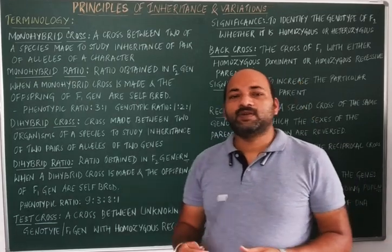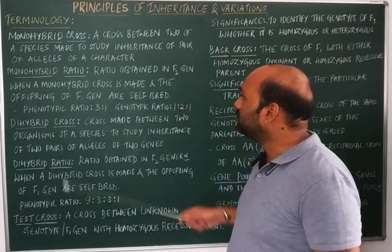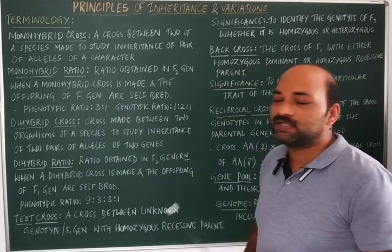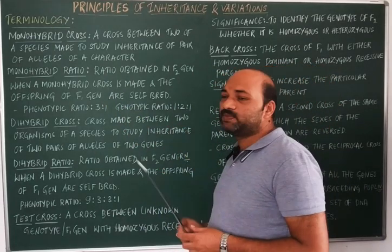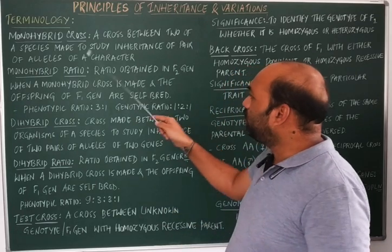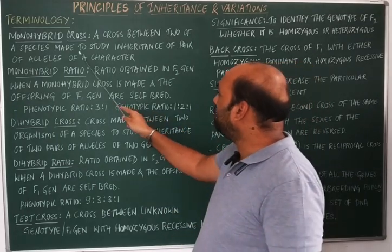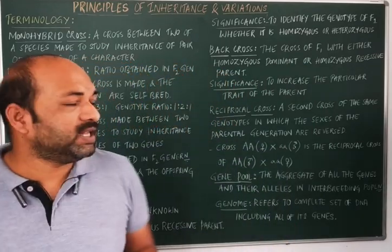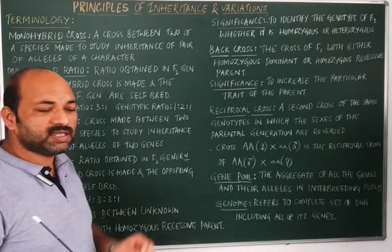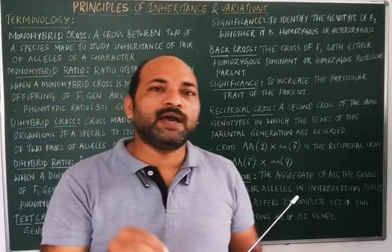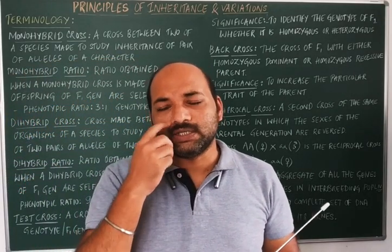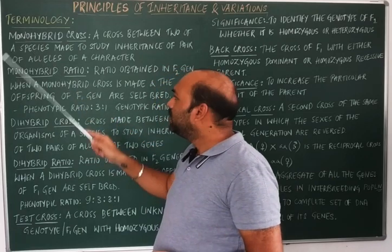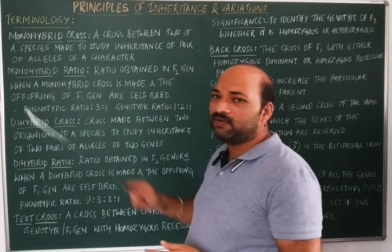The next terminology in genetics is monohybrid cross. A monohybrid cross refers to a cross between two of a species made to study the inheritance of a pair of alleles of a character. The word 'mono' means single, and 'hybrid' refers to a pair of alleles.